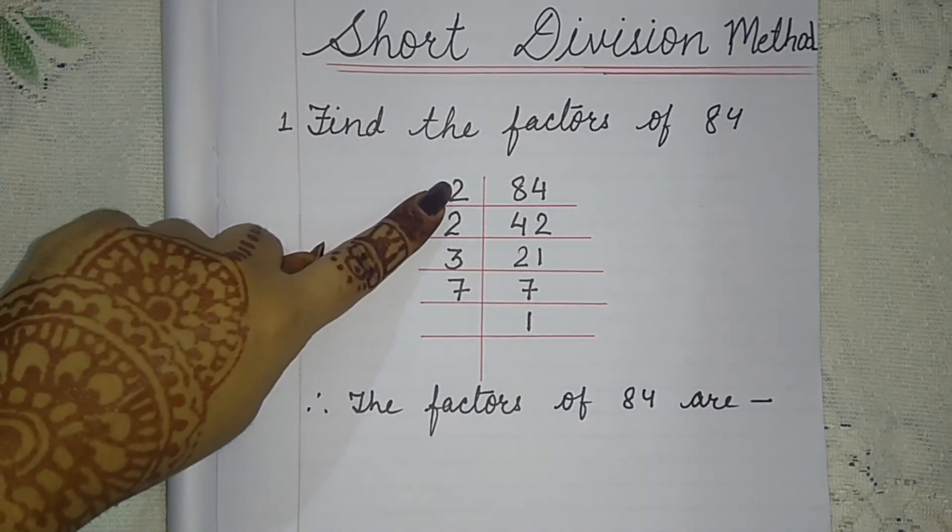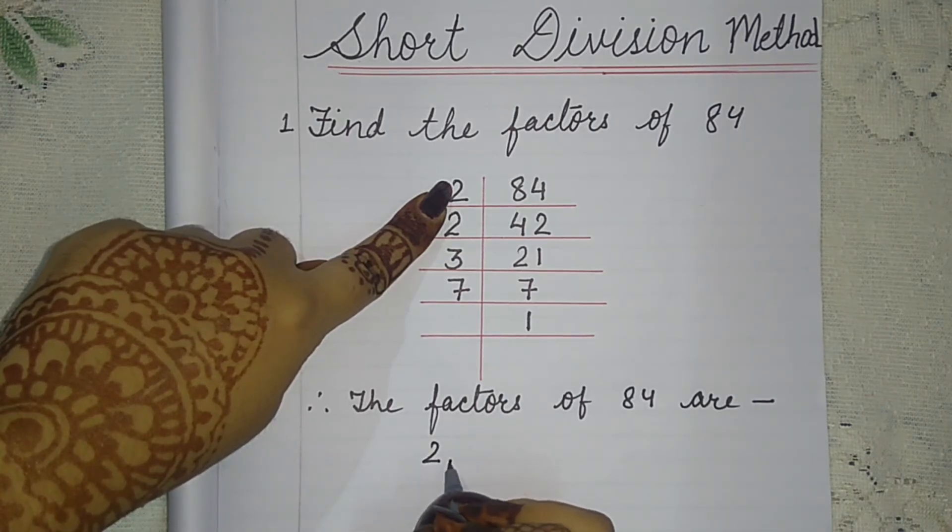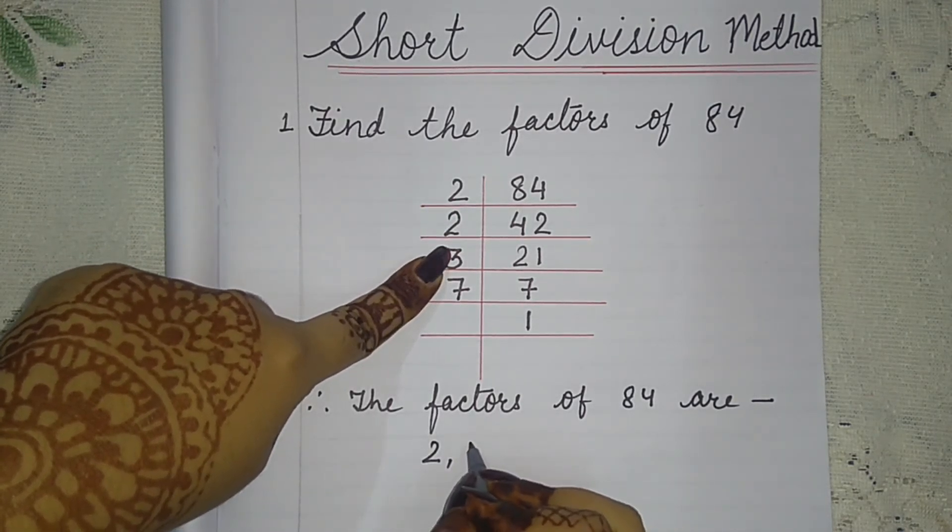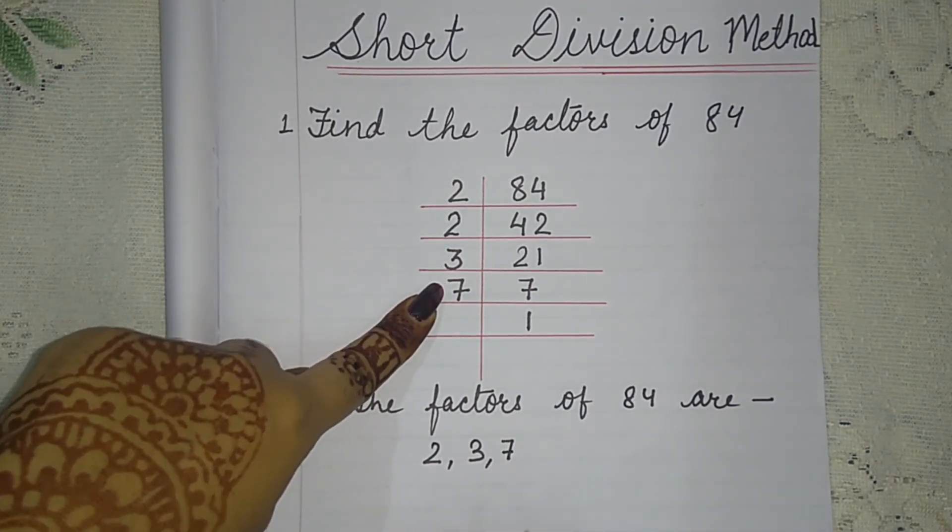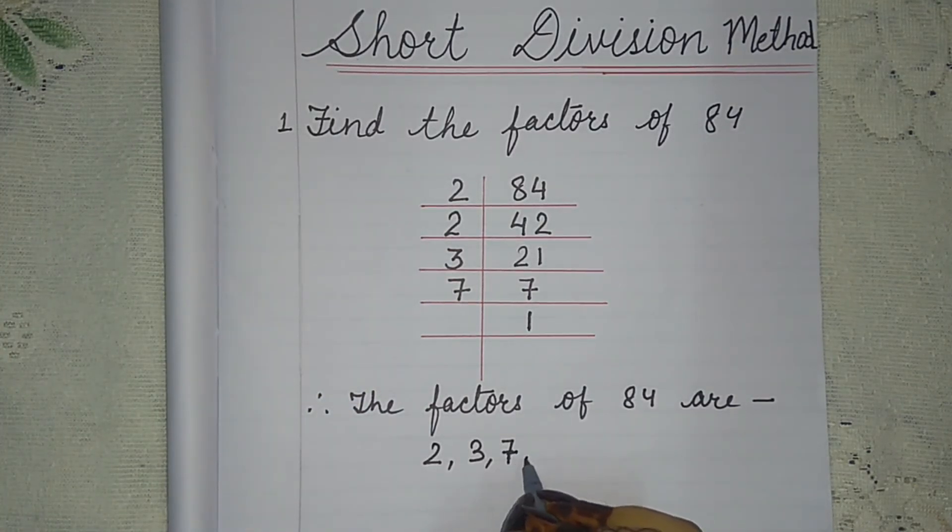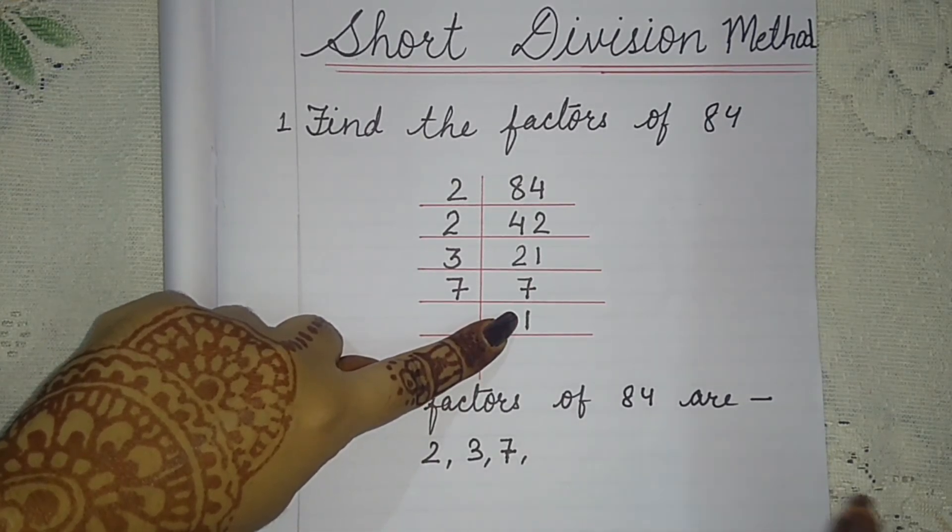What are the factors? First see, it's divisible by 2, it means 2 is a factor. It's divisible by 3, means 3 is a factor. It's divisible by 7, means 7 is a factor.